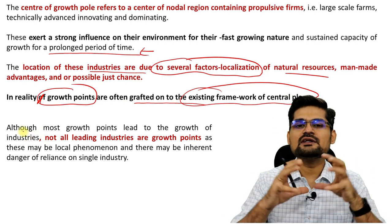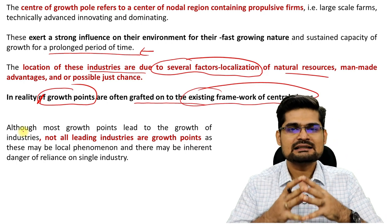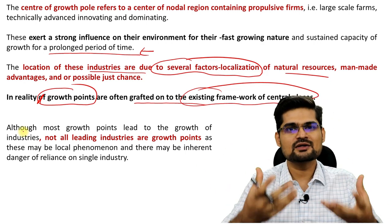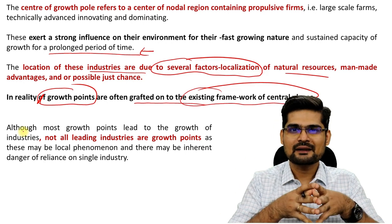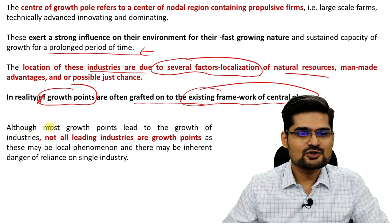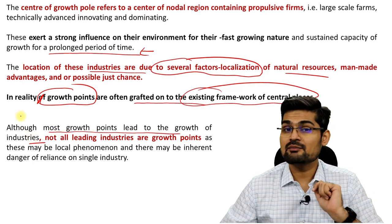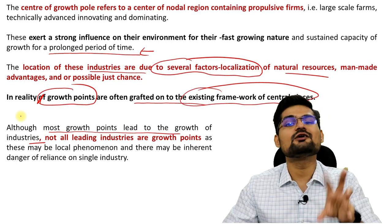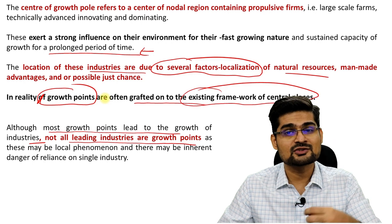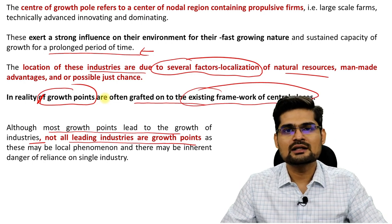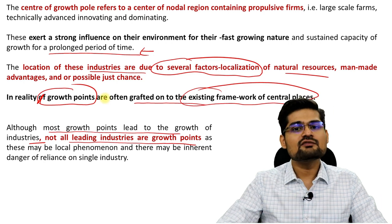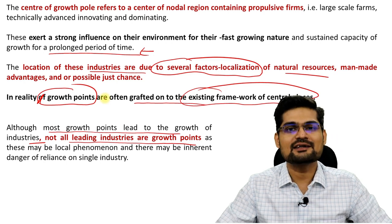There is a key difference between growth pole theory and growth center theory: growth center is an evolutionary concept. It does not say that you simply induce a particular finance or resource into a region to create a growth pole. It is like organic growth from a growth point to a growth center. Although most growth points lead to growth of industries, this was not a deterministic theory — not all leading industries are growth points. Because of several factors, such as agglomeration factors not being available, some industries will only remain a growth point and not become a growth center. It is not necessary that every growth point would evolve into a growth center — it is not based on a single factor of production.